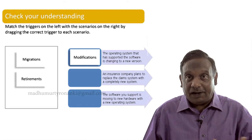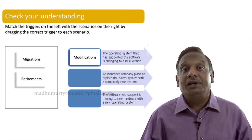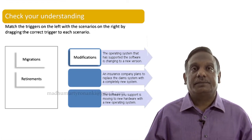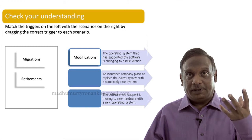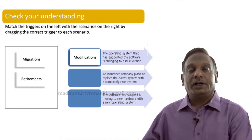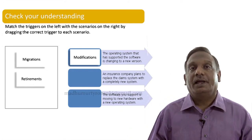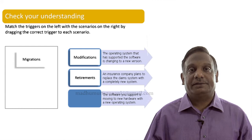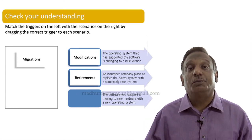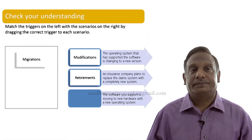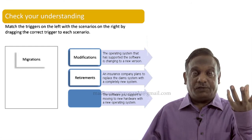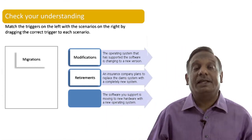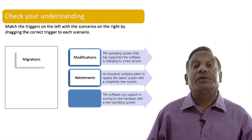The second situation: an insurance company plans to replace the claims system with a completely new system. The previous system is a mainframe legacy system, and now newer technology has come, so they want to retire the first one and move to the latest one. The trigger we are talking about is retirements. The third situation: the software you are supporting is moving to new hardware with a new operating system — brand new hardware and brand new operating system. The trigger we are talking about is migrations.